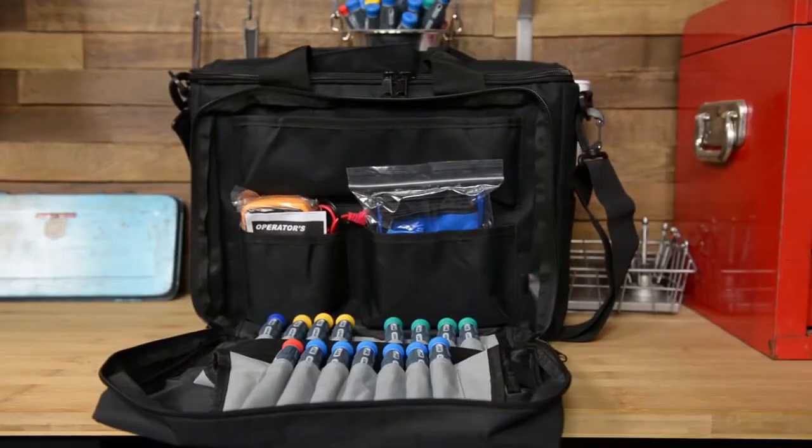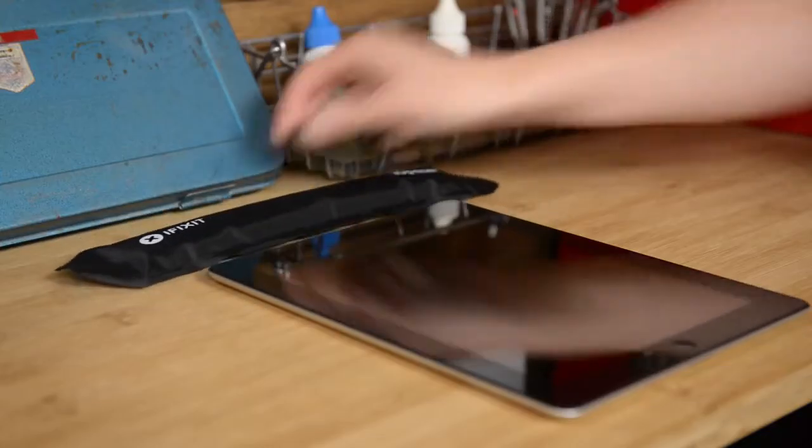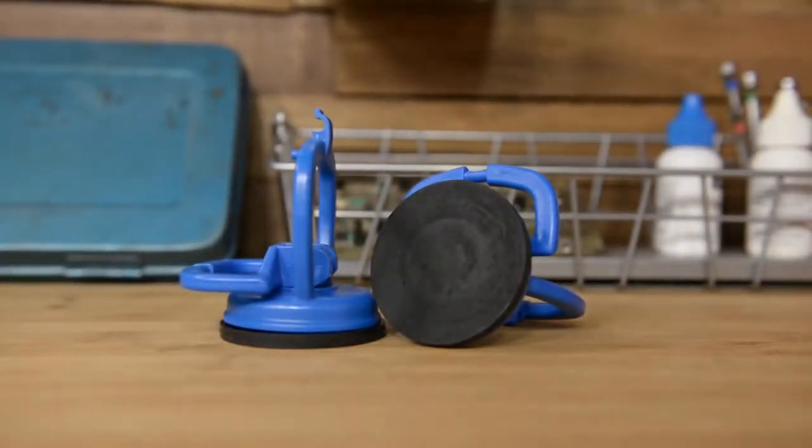Inside there are 28 tools for opening and prying, including some of our most popular tools like the jimmy and the eye opener. A pair of heavy duty suction cups, great for lifting smooth glass surfaces like iMac screens.